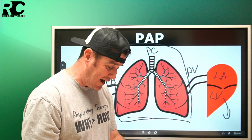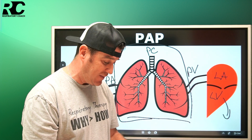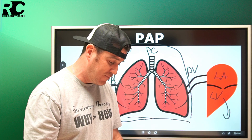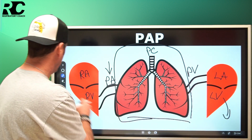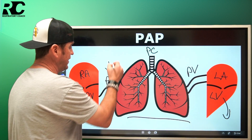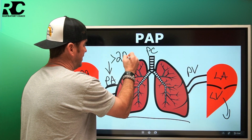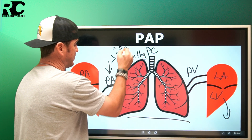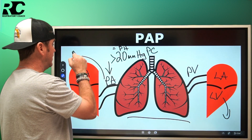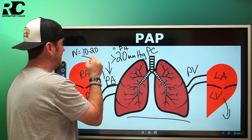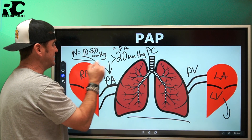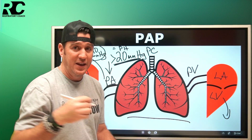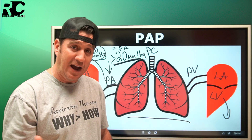Pulmonary hypertension is defined by an elevation in mean pulmonary artery pressure greater than 20 mmHg at rest. That's your key number — greater than 20 mmHg equals pulmonary hypertension. The normal range is 10 to 20 mmHg. If that number is elevated above 20, then you have a patient with pulmonary hypertension.